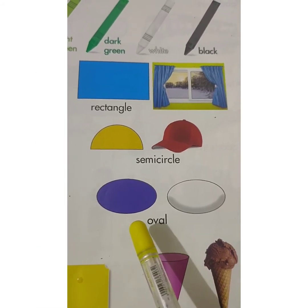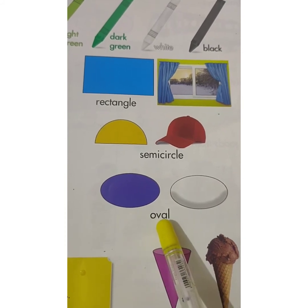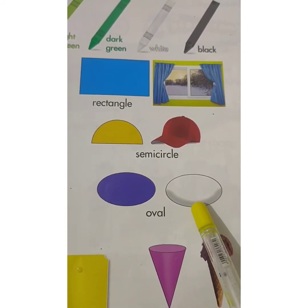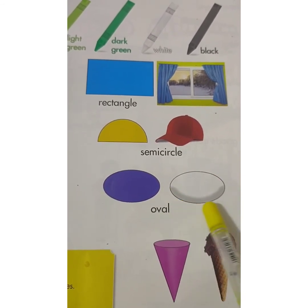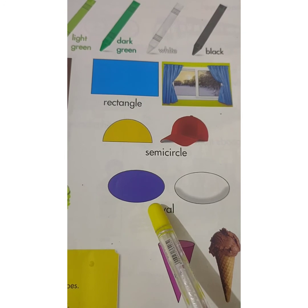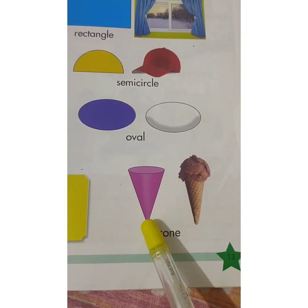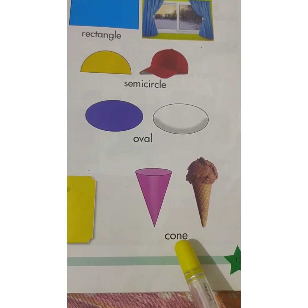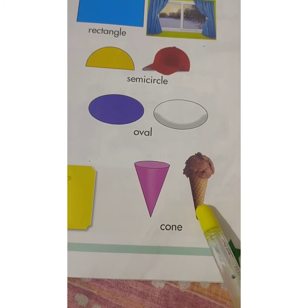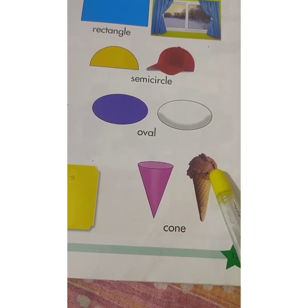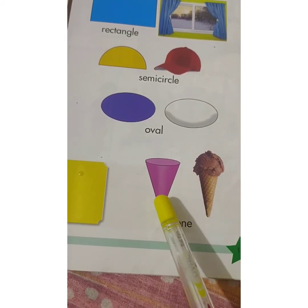This is oval shape. O-V-A-L. Oval. This is an egg. The shape of an egg is similar to the oval shape. This is cone shape. C-O-N-E. Cone. And this is an ice cream. The shape of an ice cream is also similar to the cone shape.